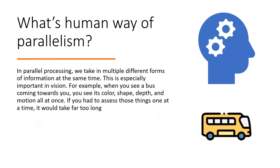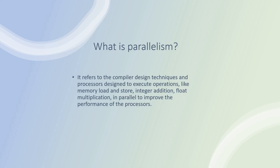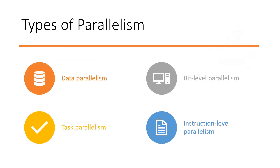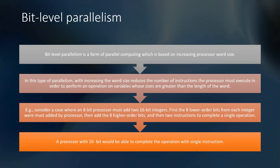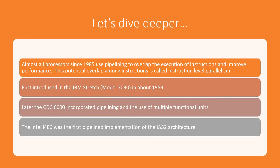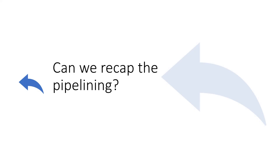A quick recap of what we discussed: parallelism was introduced with a human vision example, followed by the four types — data parallelism, bit level, task level, and instruction level parallelism. We also reviewed the history of pipelining. Now we move on to understand how pipelining evolved, what the stages are, and what the hazards are.